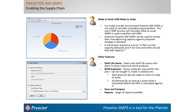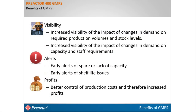Preactor 400 GMPS is suitable for make-to-stock, make-to-order, or mixed-mode environments. It also has a bill of materials feature to generate materials required below finished stock, which can be included in the MPS calculation and plan generation. Multiple plans can be generated and compared to provide a what-if capability, and reports are available to support this process. Benefits include an instant view of the impact of changes in demand or capacity, instant alerts for lack of capacity or shelf life issues — enabling better control of production costs and increased profits.